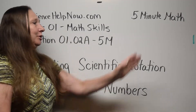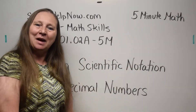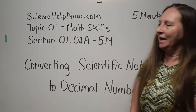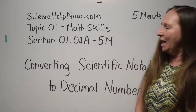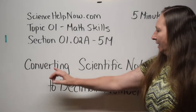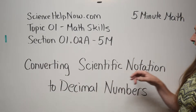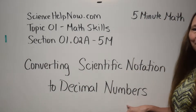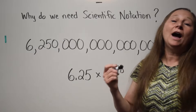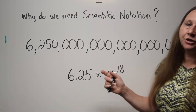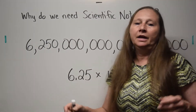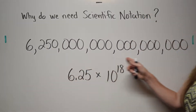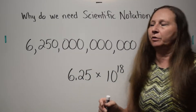Science Help here with a five minute math lesson. Topic one is math. Section 1.2a is converting scientific notation to decimal numbers. Why do we need scientific notation? Well, in science there are often very big numbers and very small numbers.